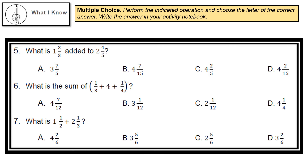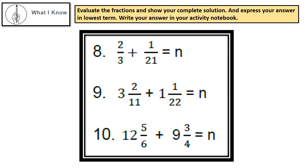For numbers 8 to 10, you have to evaluate the fractions and show your complete solution. Express your answer in lowest terms. Write your answer in your activity or mathematics notebook. Number 8: 2/3 plus 1 and 2/1 equals N. Number 9: 3 and 2/11 plus 1 and 1/22 equals N. Number 10: 12 and 5/6 plus 9 and 3/4 equals N. Show your complete solution. You can do it, Grade 6!